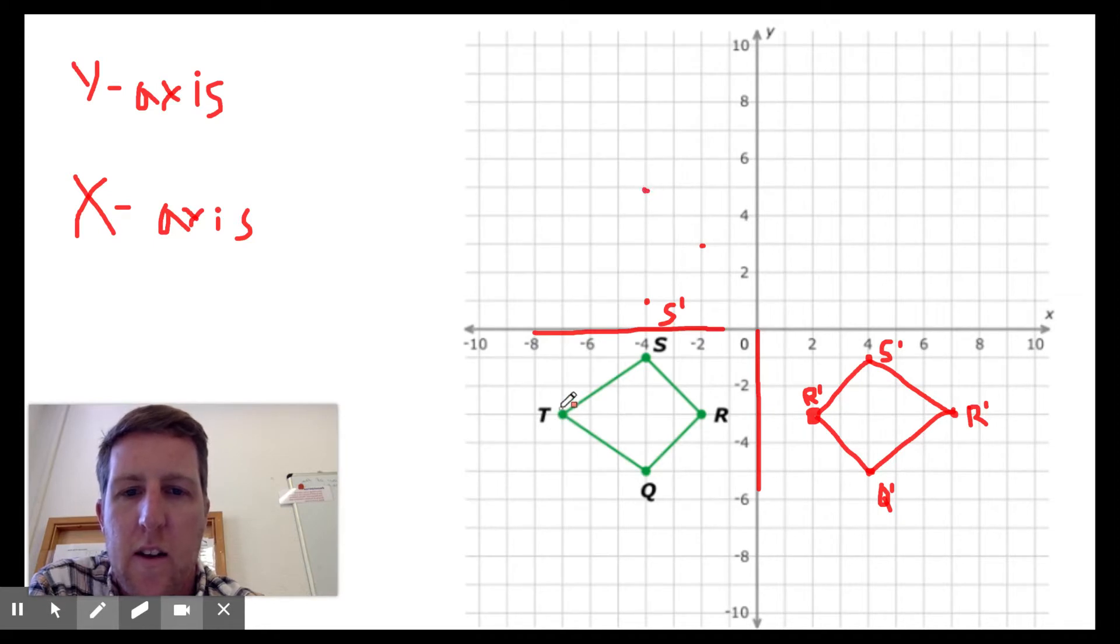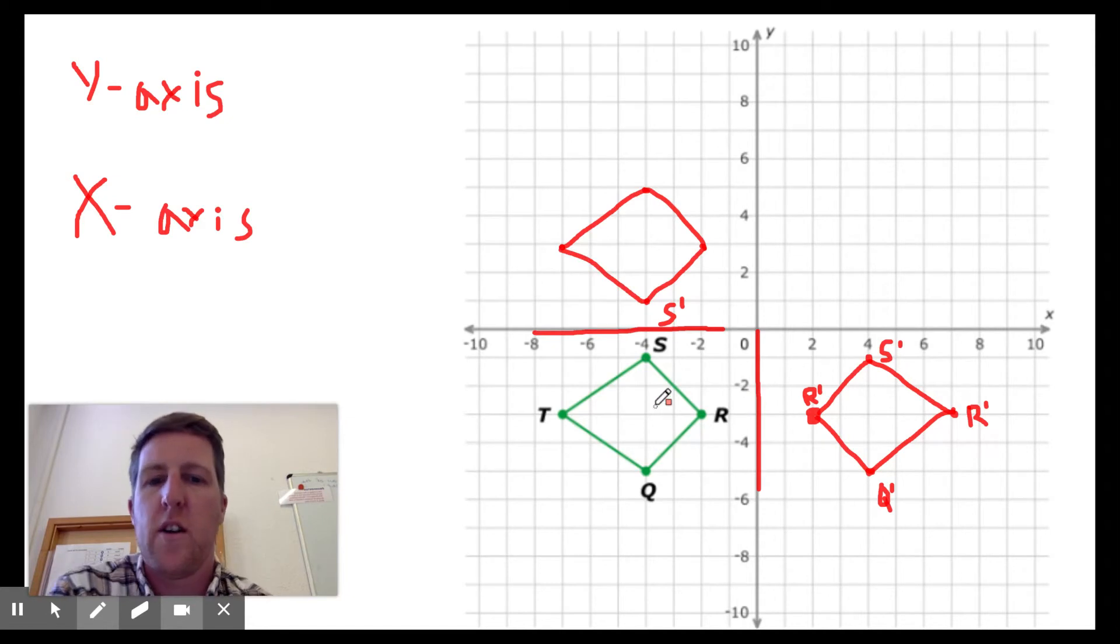And T is the same, three squares away, but straight up in line here. And we connect them like that. So that's the version of the reflection in the x axis for this green shape.